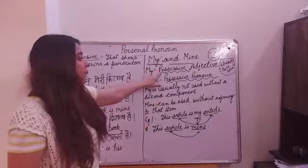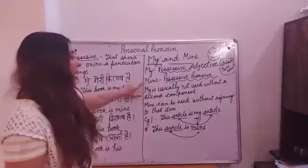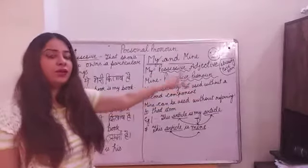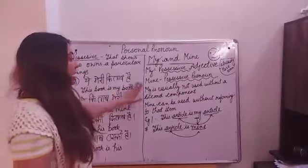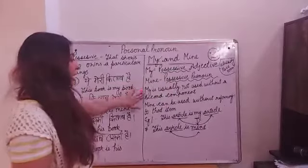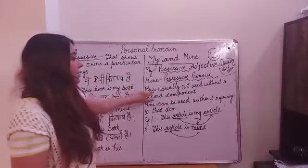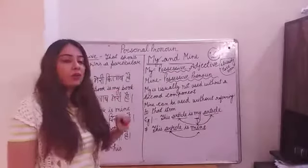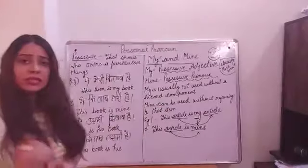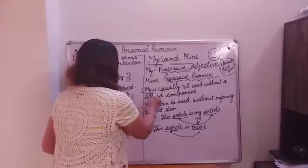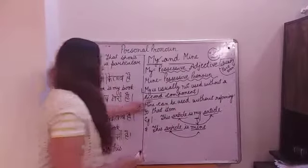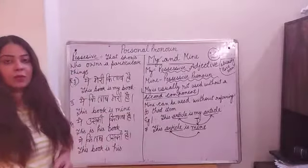'My' is basically a possessive adjective, while 'mine' is a possessive pronoun. The key difference is that 'my', as a possessive adjective, cannot be used without a second component — meaning a noun must follow it. This is very important: 'my' requires a second component.